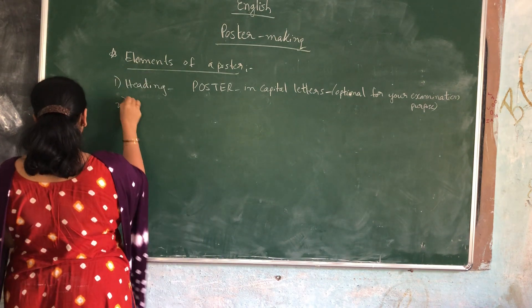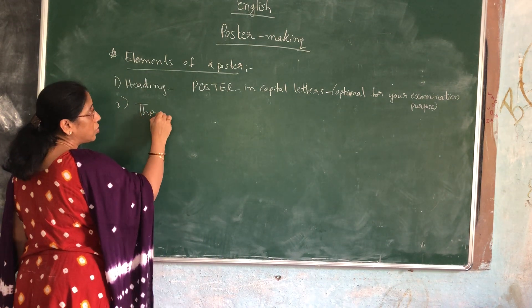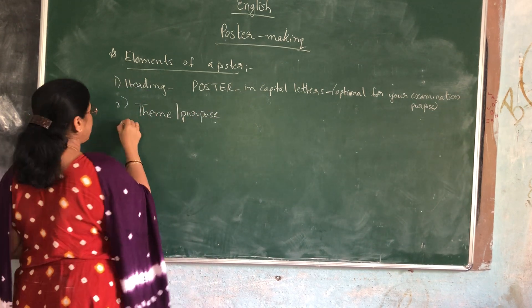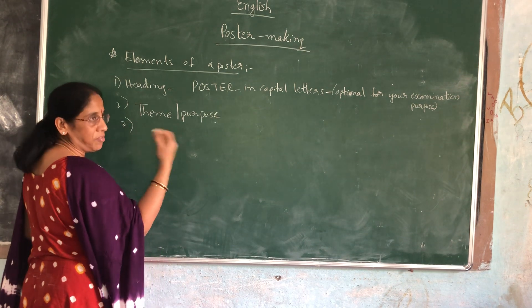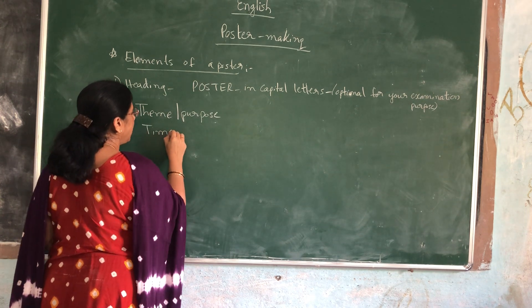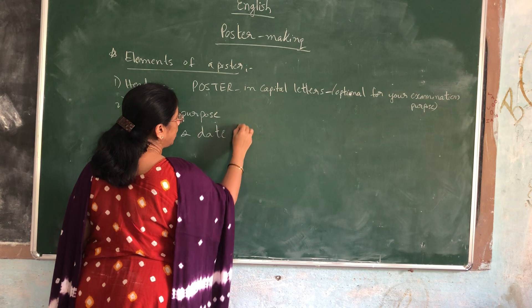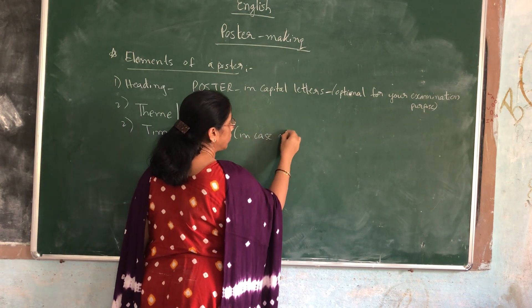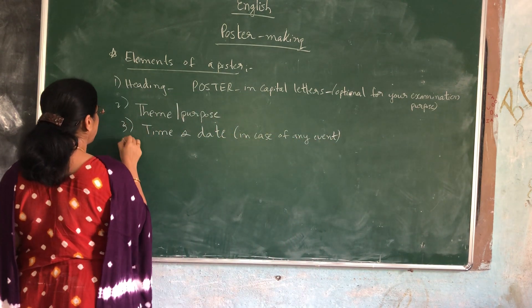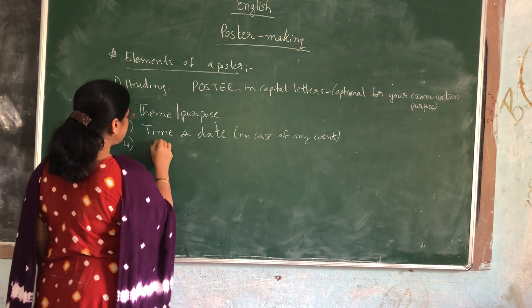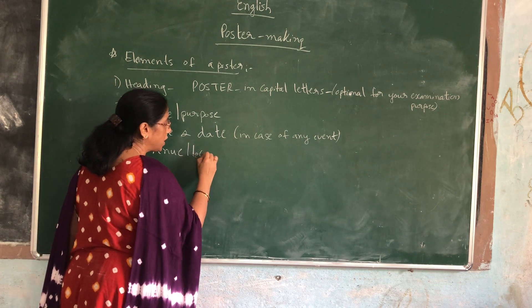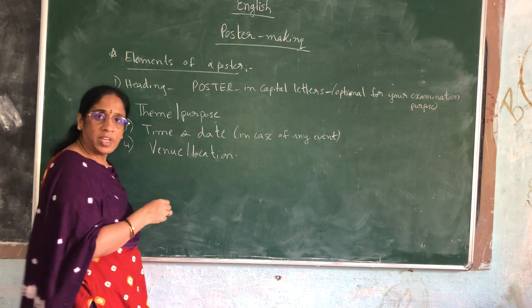Next, we should know the theme — the purpose or reason for which the poster is made. This should be clear on the poster. Along with that, in the case of any event or opening that is going to take place, the time and date should also be mentioned. We should also mention the venue, or the location where the event is going to take place. This is very important.